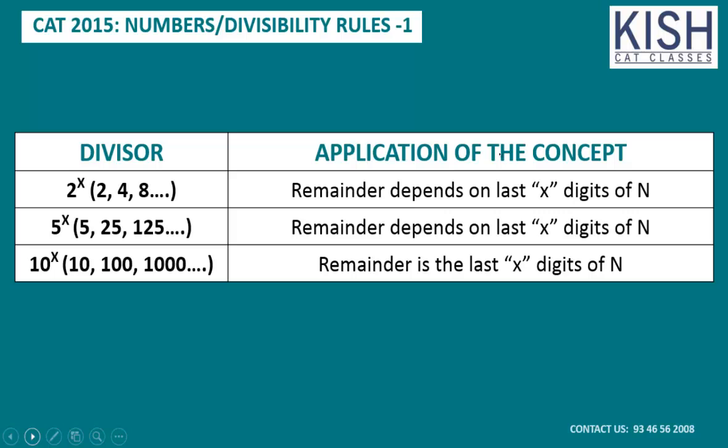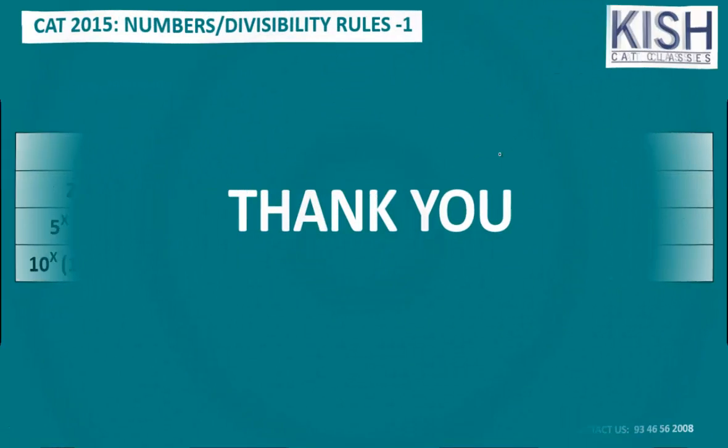I've written the divisor and the application of the concept in a summary. In the next video I'm going to take divisors 9 and 11. There are 3 more videos left in divisibility rules: the next covers 9 and 11, the third covers 7, 13, and 37, and the final one covers numbers of the format 10^x minus 1 and 10^x plus 1. Once all four videos are finished, I'll solve all original CAT questions from the last 25 years.